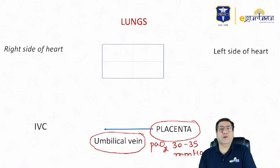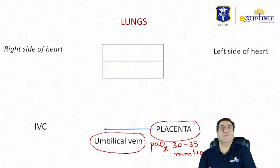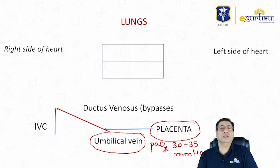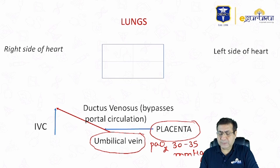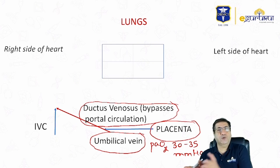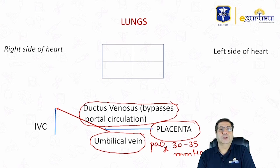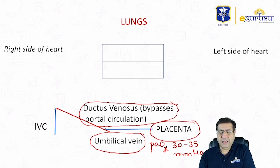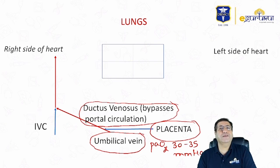This umbilical vein, with a PaO2 of about 30 to 35 mmHg, is divided such that 50% enters into the portal circulation. The remaining 50% bypasses the portal circulation and enters into the inferior vena cava through the ductus venosus. So the ductus venosus bypasses the portal circulation and allows 50% of the umbilical vein blood to drain into the inferior vena cava.